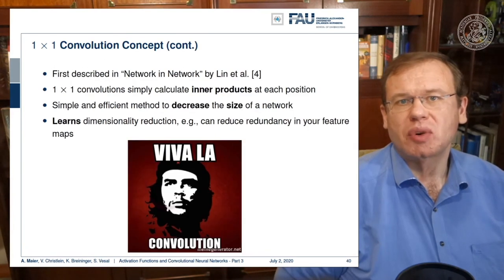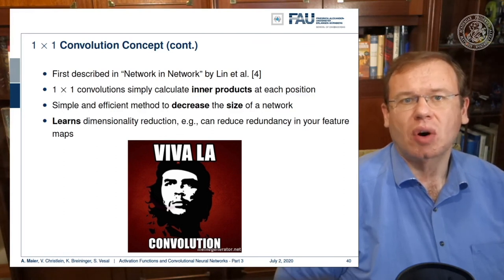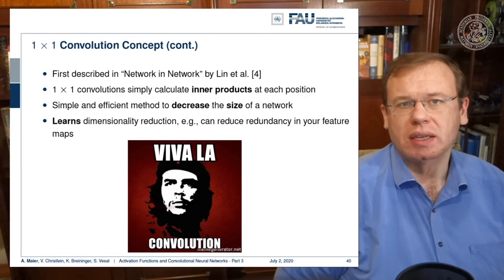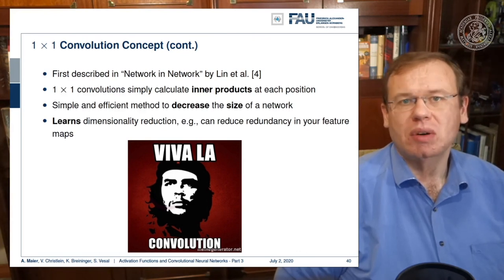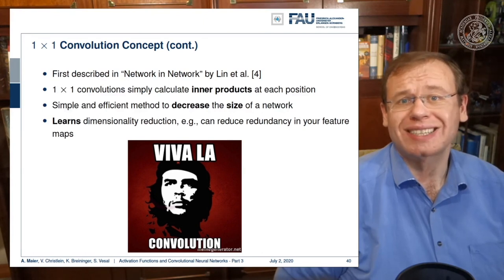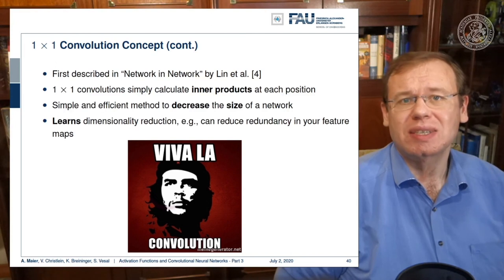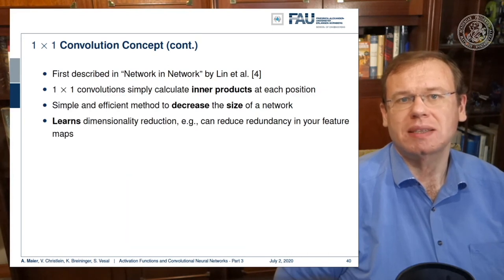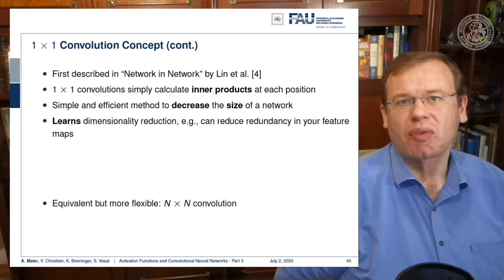What it does is it computes a reduced number of feature maps in the direction of the channels because there we have the full connection. So essentially we can now do a channel compression with one by one convolutions. We can flatten the input into one dimension and map everything into the channel direction. Thus, one by one convolutions are fully connected layers. We can essentially express also the entire concept of fully connected layers with them if we arrange the outputs in an appropriate way.